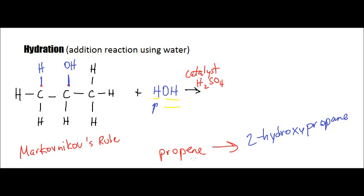Notice we started off with a double bond and unsaturated carbons. Which carbon is going to grab the hydrogen if hydrogen is present? We're going to use what we call Markovnikov's rule.